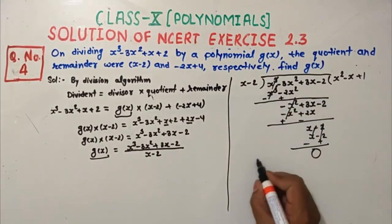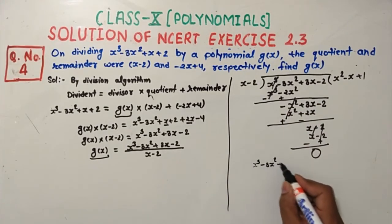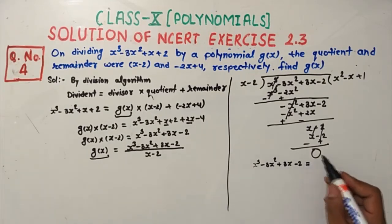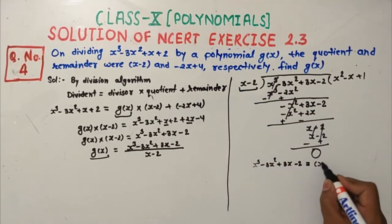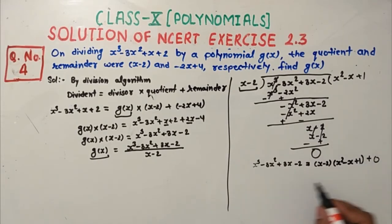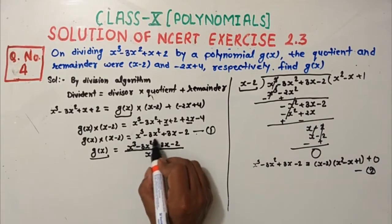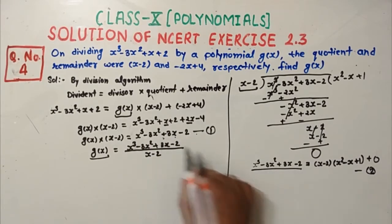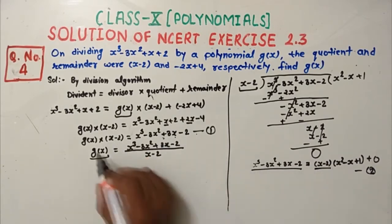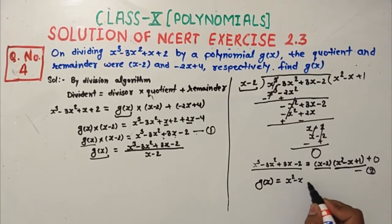So the dividend x³ minus 3x² plus 3x minus 2 equals divisor (x minus 2) into quotient x² minus x plus 1, and remainder is 0. Comparing with equation 1, at the place of g(x) we get x² minus x plus 1. So finally, g(x) = x² minus x plus 1. That's what we had to find.